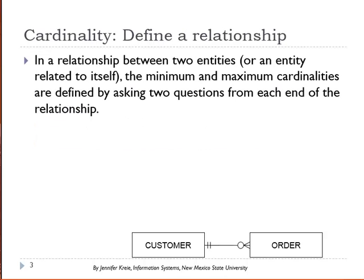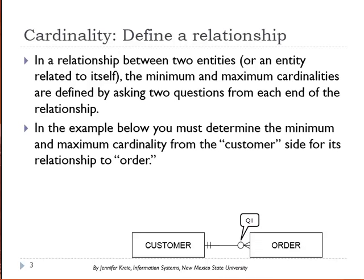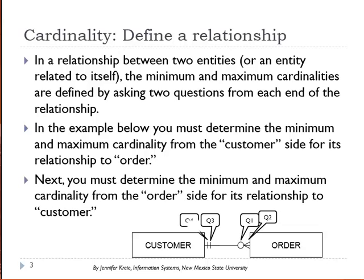When you define a relationship — between two entities or an entity related to itself — you have minimum and maximum cardinalities. The best way to define those is by asking two questions from each side of the relationship. In this example, you first determine the minimum and maximum cardinality from the customer side to the order, then from the order side to the customer.